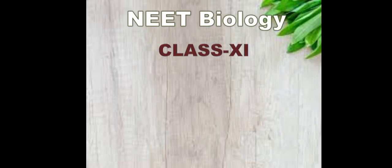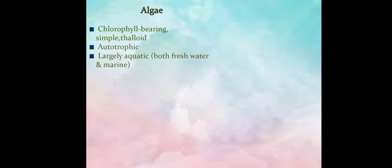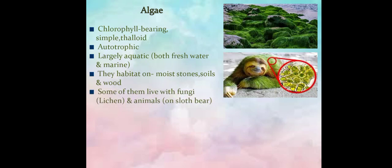Welcome everyone, welcome to Roots Biology. Today we will discuss the second part of plant kingdom: the algae. They are chlorophyll bearing, simple thalloid plants and of course autotrophic. They can make their food by photosynthesis. They are largely aquatic, both freshwater and marine water plants.